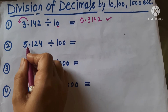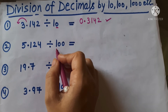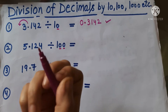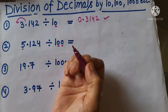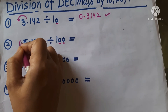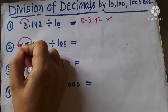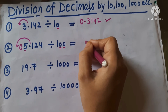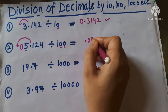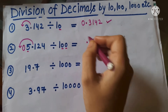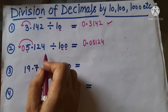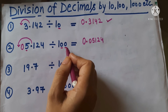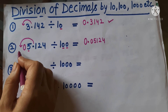Now the question is 5.124 which is going to be divided by 100. Here we have 2 zeros with 1. So our decimal will be shifted to the left side up to 2 places. The first place is there but we don't have a digit, so we will put 0. Our decimal will shift to the left up to 2 places because with 1 we have 2 zeros. So the answer is 0.05124. You can put zeros in the front. This is our answer to the second question — just shift the decimal by the number of zeros.